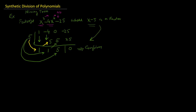Our resultant polynomial is of degree 2, because we divided a degree-3 polynomial by a degree-1 polynomial. So the coefficient of x² is 1, giving x². The coefficient of x is 1, so plus x. And the constant term is plus 5. This is the second factor, so the original polynomial can be written as x² plus x plus 5, multiplied by x minus 5.